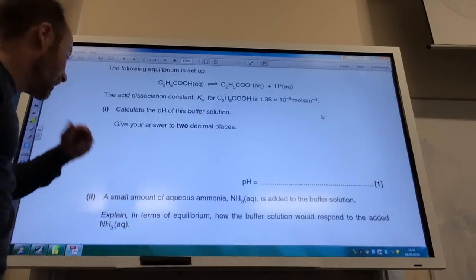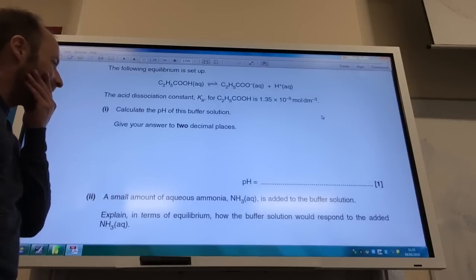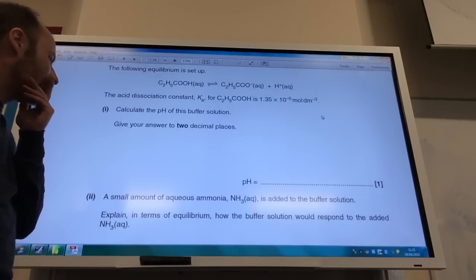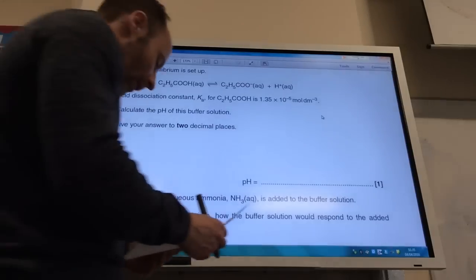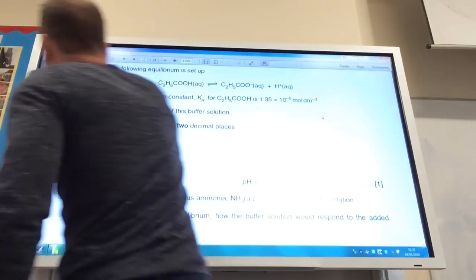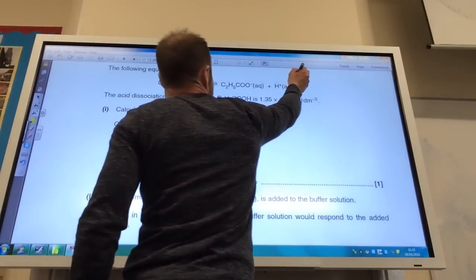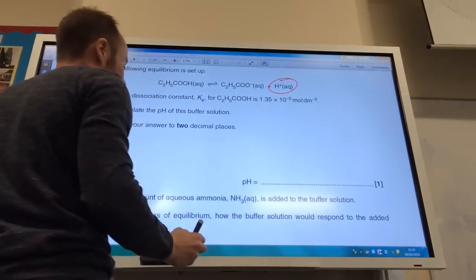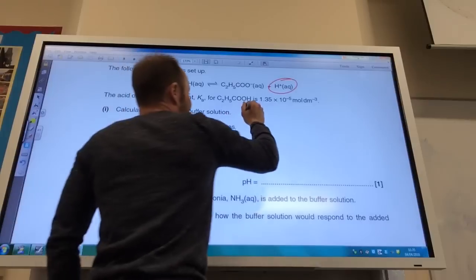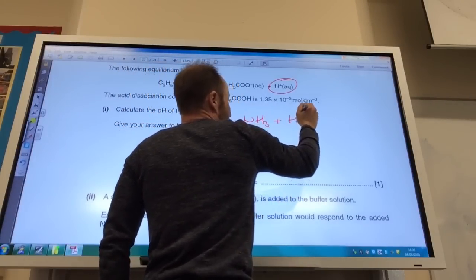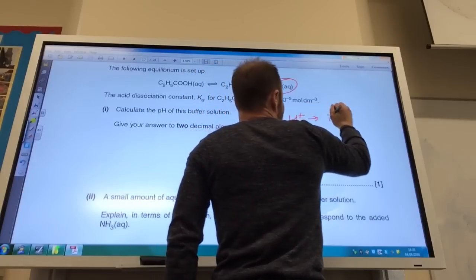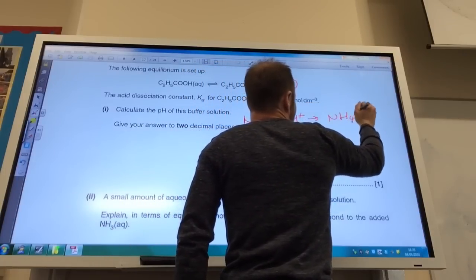Okay, then we'll just do this one. A small amount of aqueous ammonia is added to the buffer solution. Explain how the buffer solution would respond to the added ammonia. So the NH3 would react with the H plus ions. So the NH3 plus H plus would give me ammonium ion.